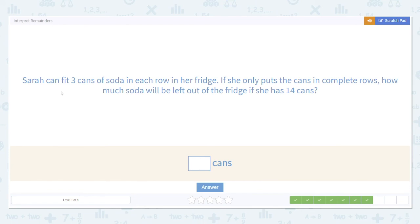Sarah can fit three cans of soda in each row in her fridge. If she only puts the cans in complete rows, how much soda will be left out of the fridge if she has 14 cans? Again, we're looking for what's left over, which is the clue to look for a remainder.